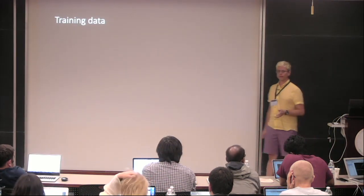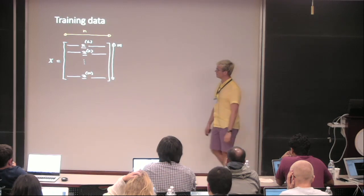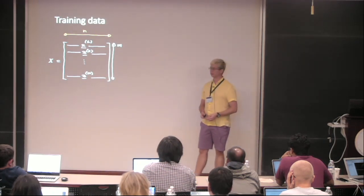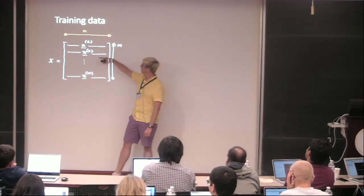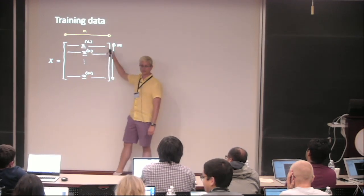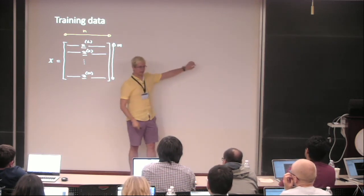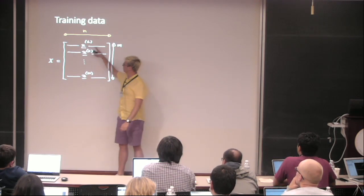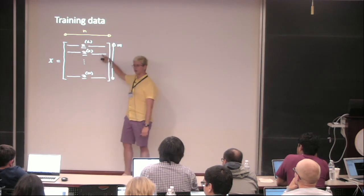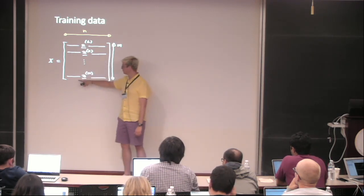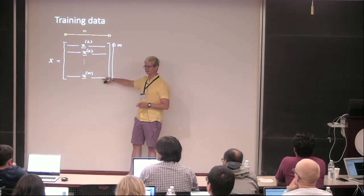Training data — we need to put the data in a way that we can use it for training. First, we define a matrix X, called the design matrix. In my rows, I have vectors representing coordinates. The first row is the coordinate of my first point in the spiral plot: first coordinate, second coordinate. Then I get the second point: first coordinate, second coordinate. And so on until the last point. Do you understand? Okay.